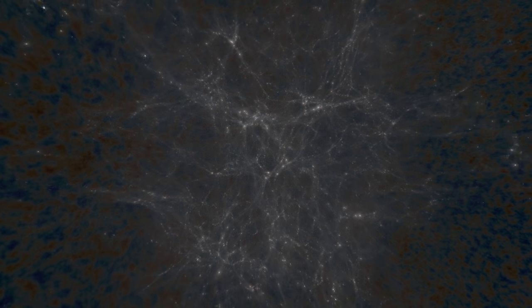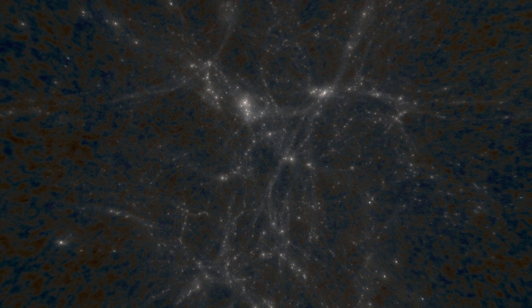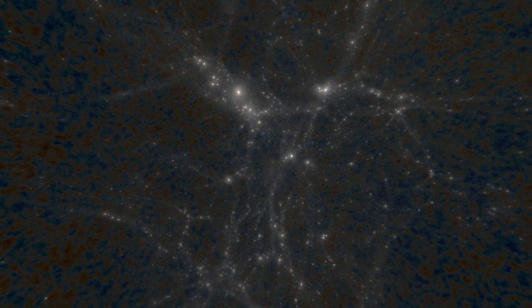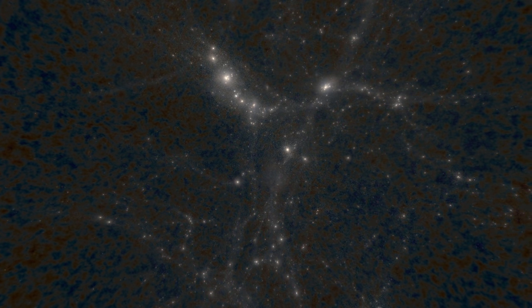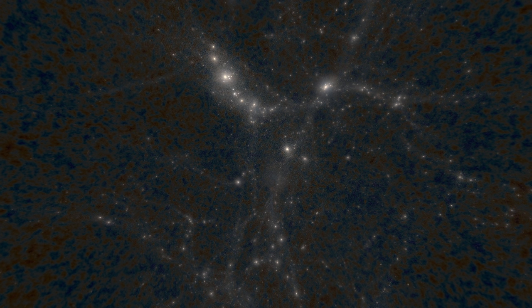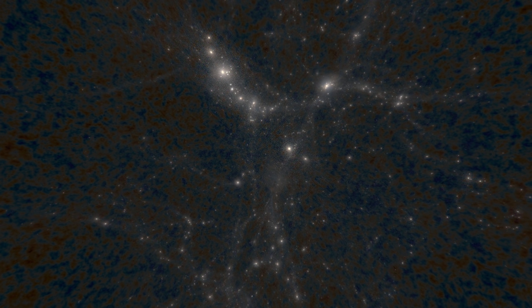At the intersection of those filaments, the accumulation of matter is sufficient to form the first stars. The assembly of those stars become galaxies, and the dense regions of galaxies form clusters of galaxies. Simulations like this one allow us to understand the emergence of these large-scale structures.